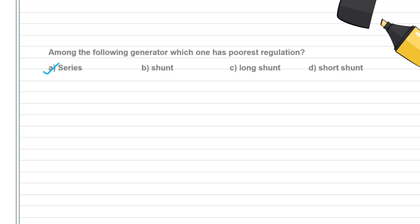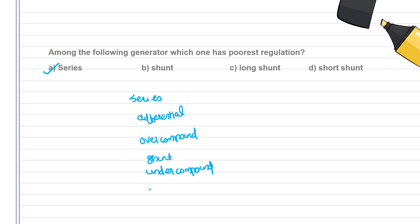The regulation order from poorest to best is: series (poorest), then differential compound, then over-compound, then shunt, then under-compound (best regulation). The poorest regulation is the series generator, and the best regulation is the under-compound generator.